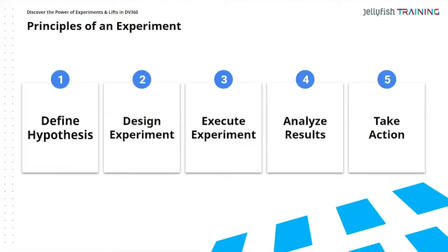Let's review the five principles of an experiment. First, we define the hypothesis — what are we trying to prove? It could be that one audience is better than another, or that a search campaign is better than display or video. Then we think about how to design the experiment: the components, dates, creative, and so forth. Once we have a clear design, we execute the experiment.